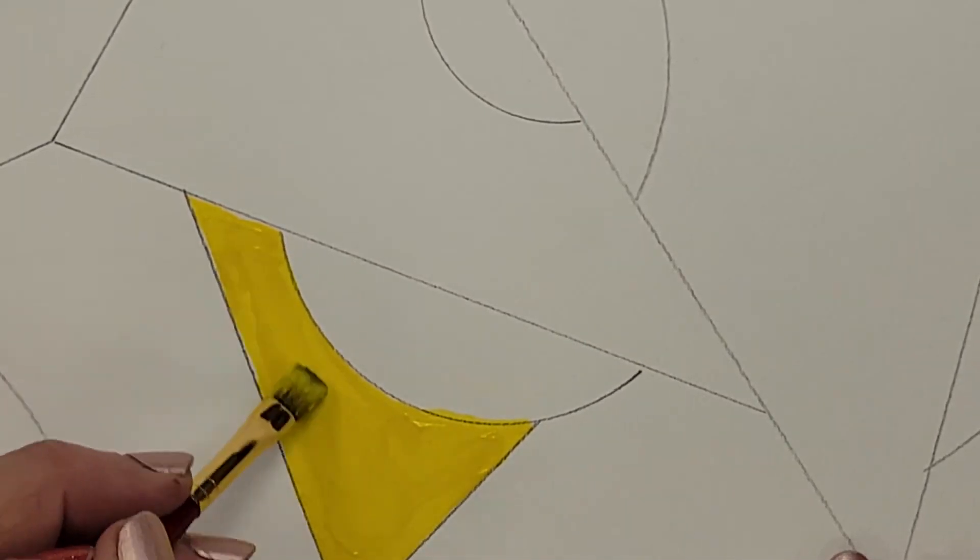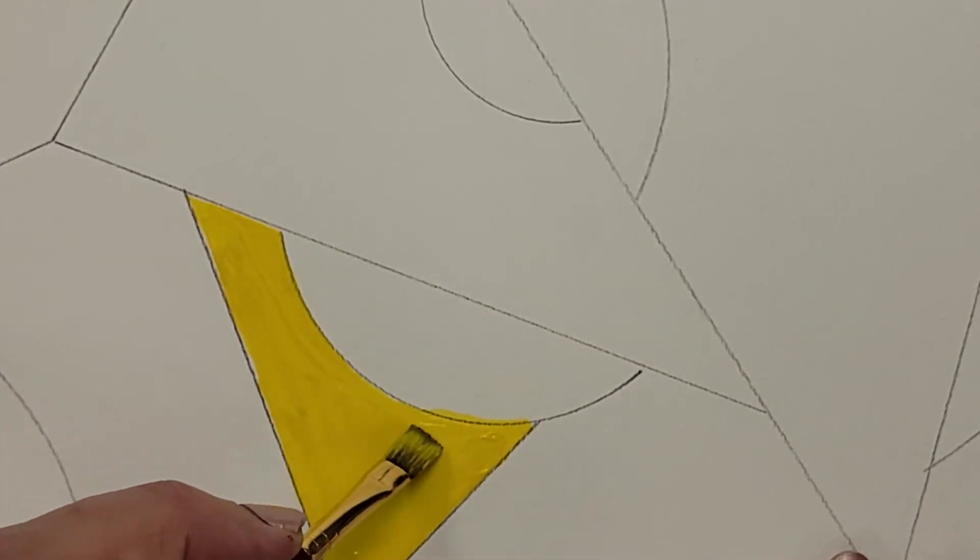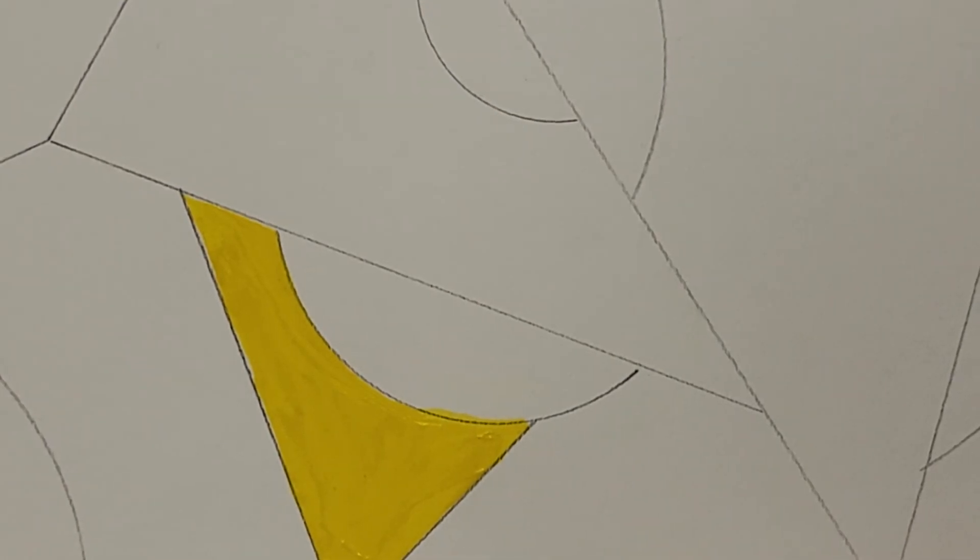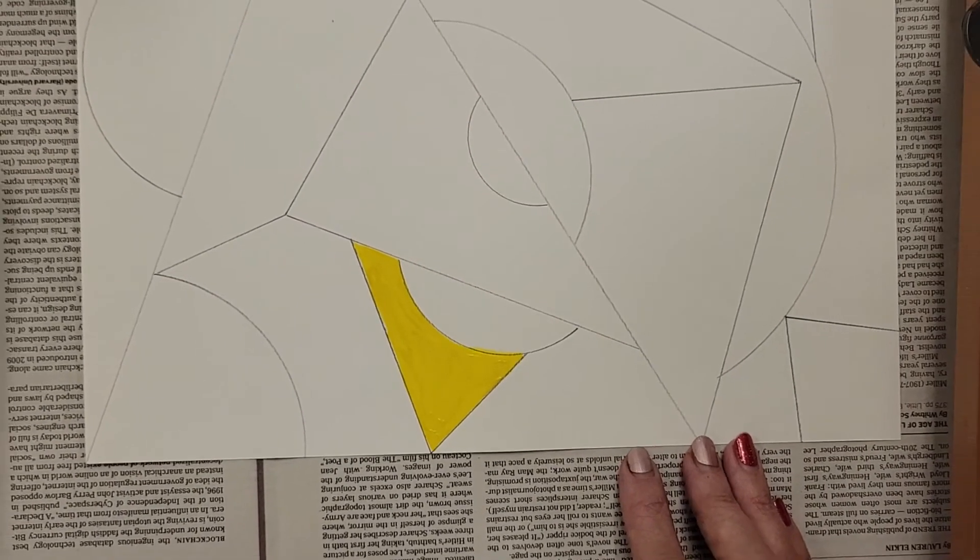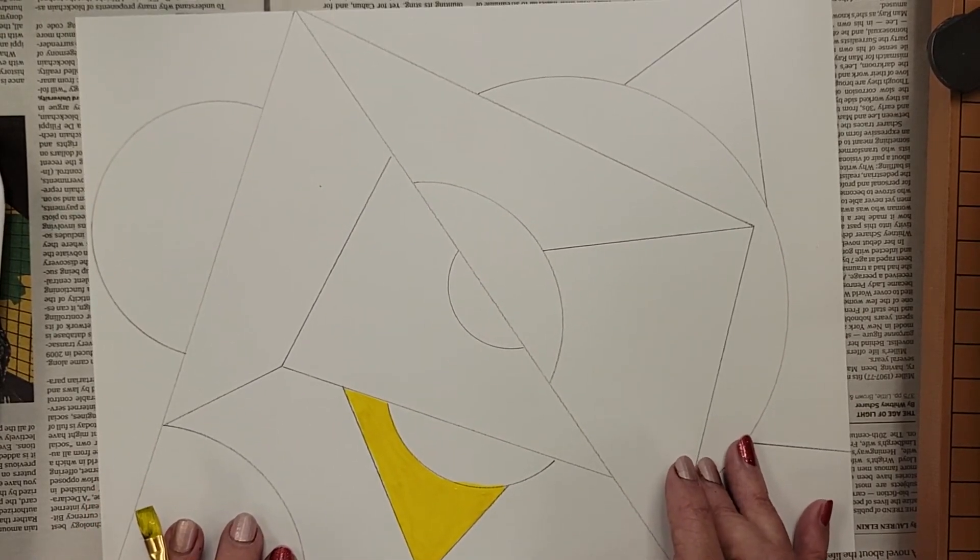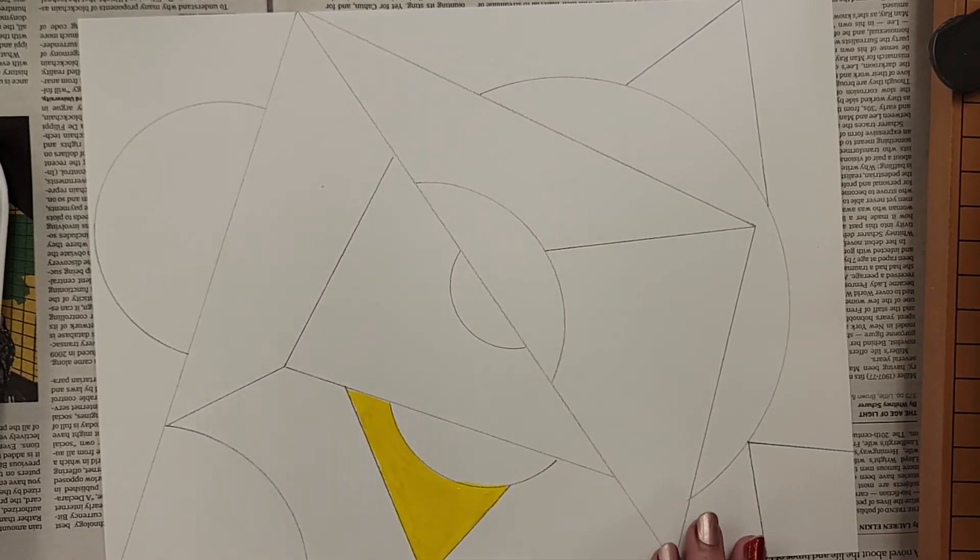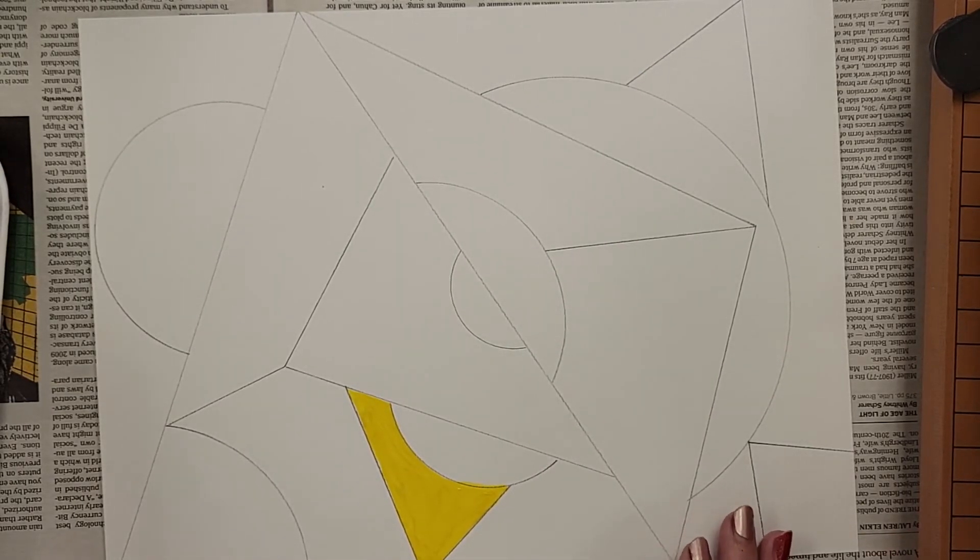So I can go in later and get those edges. Now as I'm painting, once I have one shape done, I want to make sure that I keep my design balanced. So if I have a yellow shape at the bottom, I might need another yellow shape at the top somewhere. I don't want to paint yellow and then just move on to a different color.